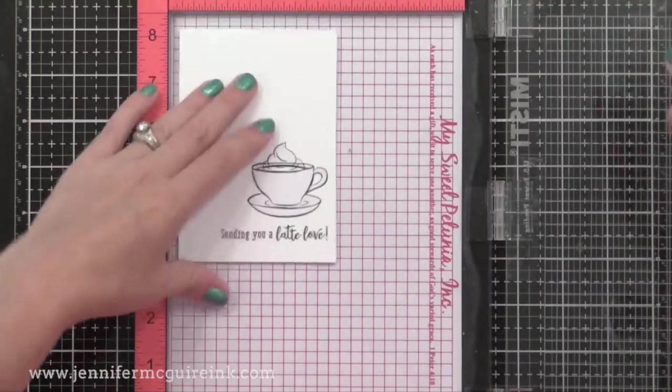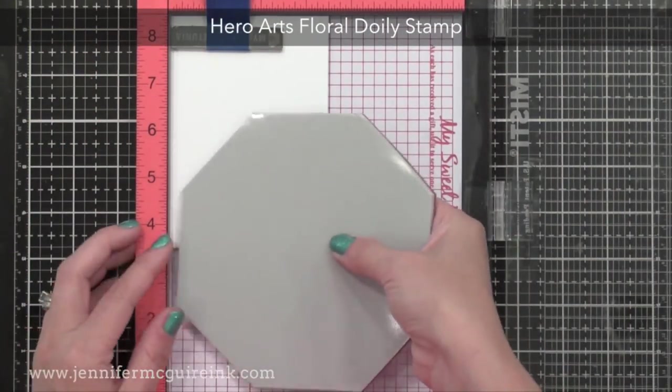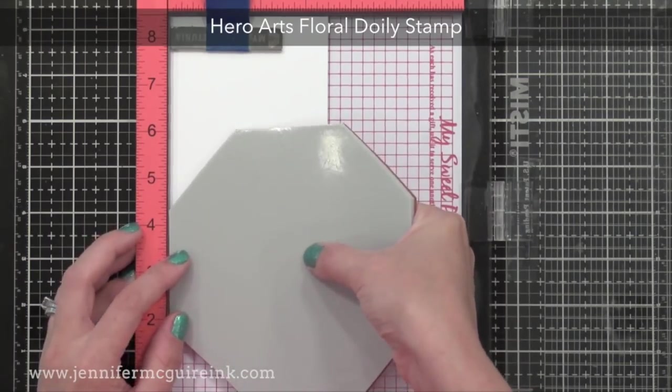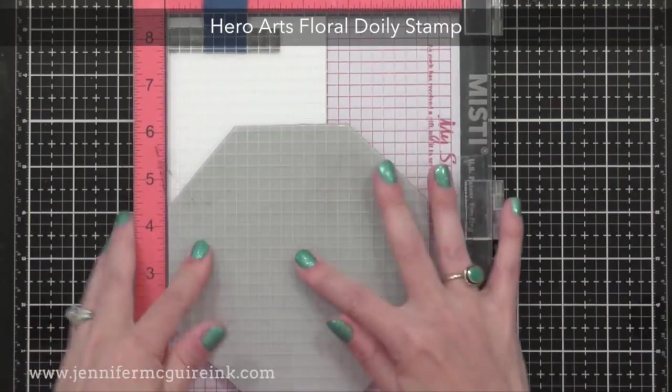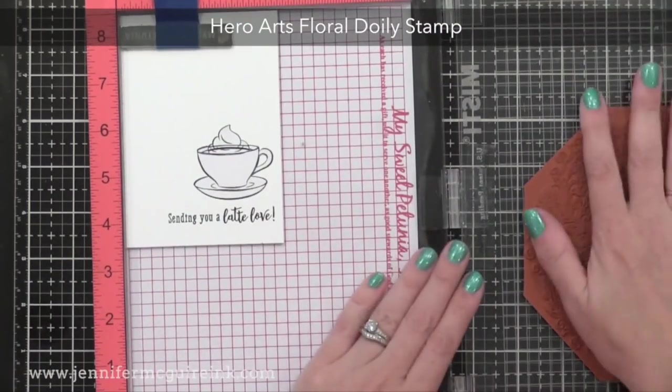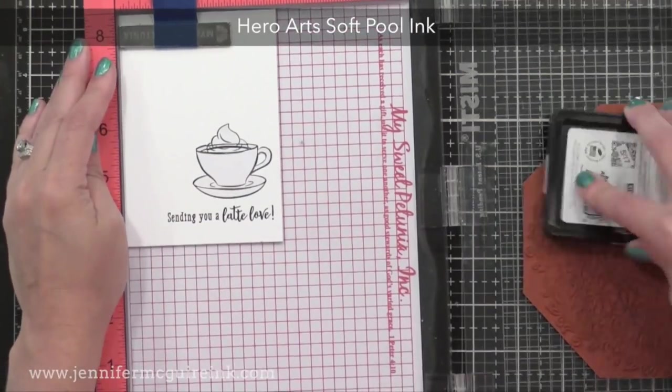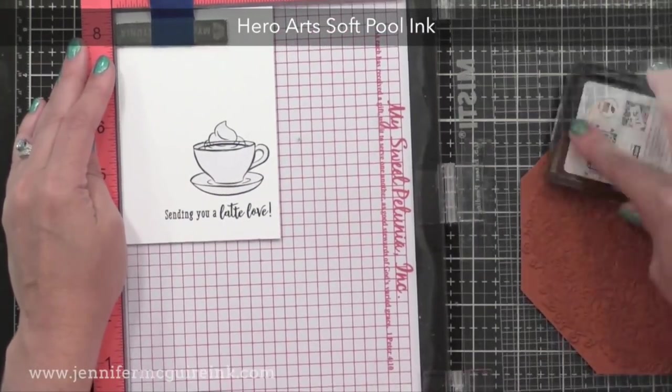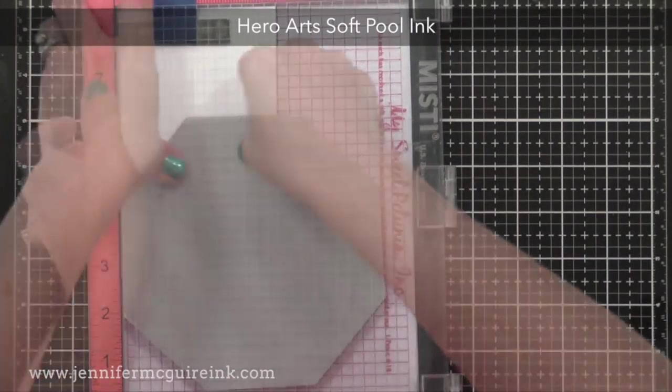Next I'm putting the mask over the cup and the whipped cream to completely mask off that image. I'm removing the mat from my MISTI because I plan to stamp on this with a cling stamp. So this is the Hero Arts Floral Doily stamp. It's a great new background stamp, and I'm placing it over the corner of our card. I'll stamp this with Hero Arts Soft Pool ink, and I don't have to worry about my cup getting any of the stamping on top because we have it masked.